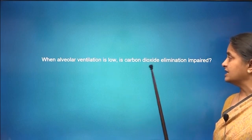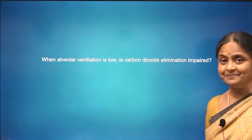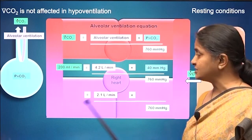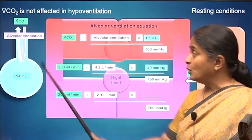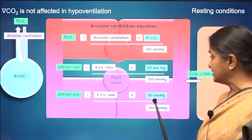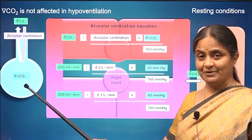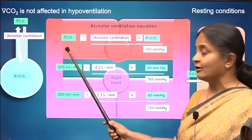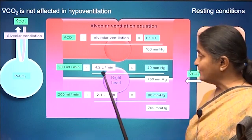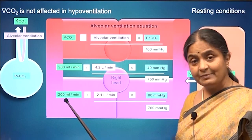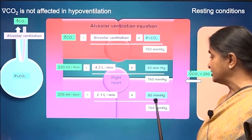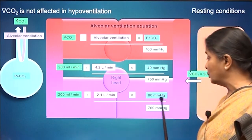When alveolar ventilation is low, is carbon dioxide elimination impaired? The answer is: even if alveolar ventilation reduces, the amount of carbon dioxide exhaled will be the same as what is formed — that will not be affected. But the consequence is that the concentration of alveolar carbon dioxide will go up. And if this goes up, arterial carbon dioxide will also increase. Even if ventilation reduces, carbon dioxide elimination per se at steady state will not be affected, but the concentration of carbon dioxide in the alveolus and arterial blood will increase.